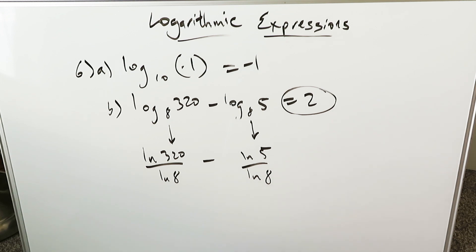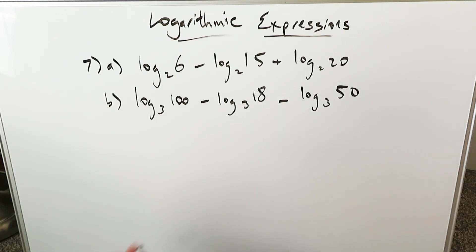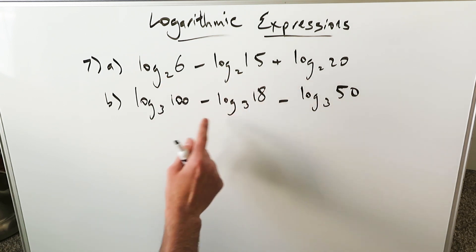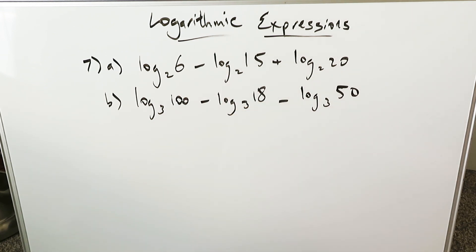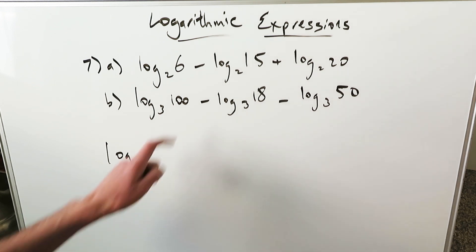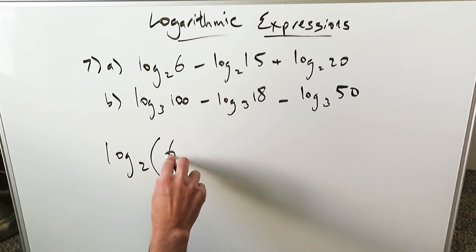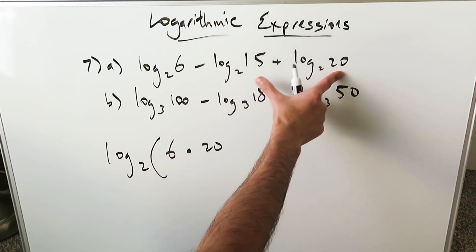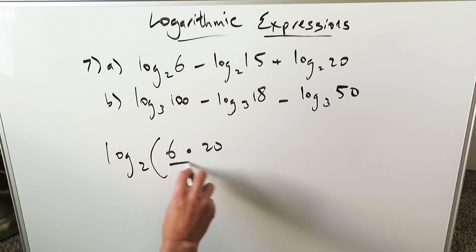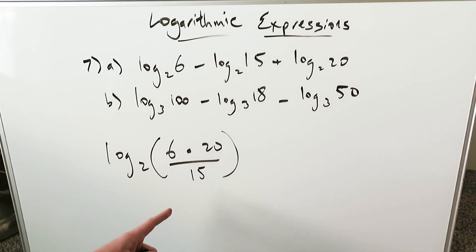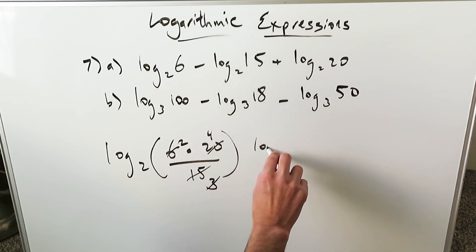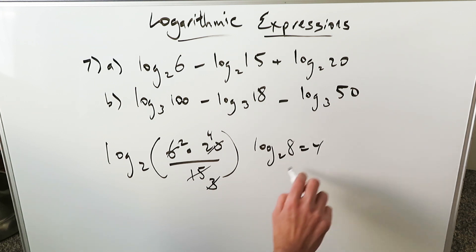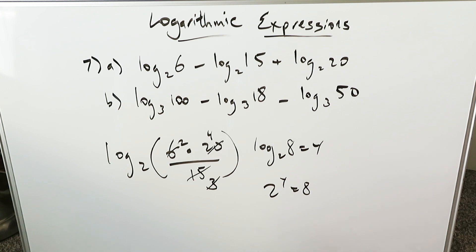Question 7A and B — exact value determinations. We have similar bases so we can do something. Log base 2 of 6 minus log base 2 of 15 plus log base 2 of 20 — bring everything under a common log. Where you have a minus it becomes a quotient; where you have a plus it becomes a product. So I have 6 times 20 divided by 15 under log base 2. Simplifying: 6×20=120, 120/15=8. Log base 2 of 8 equals Y — 2 to the Y equals 8, so Y equals 3.